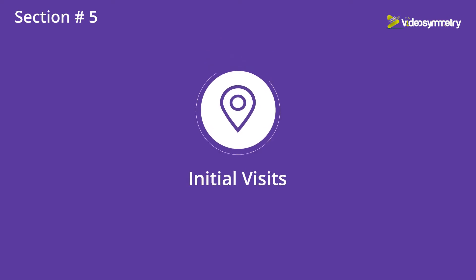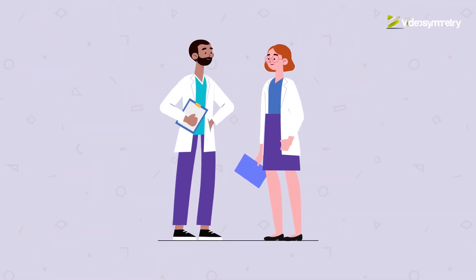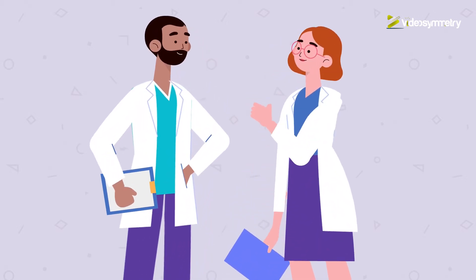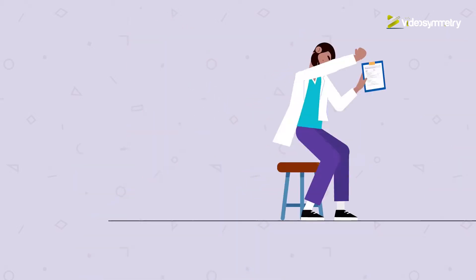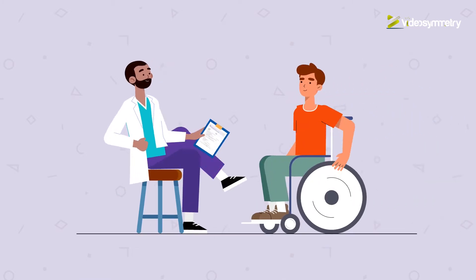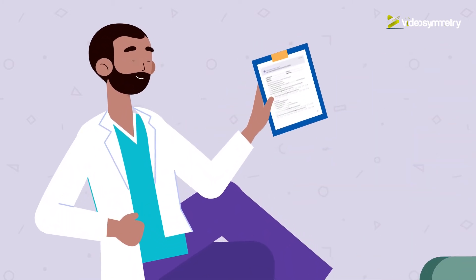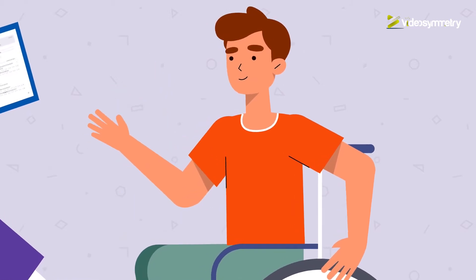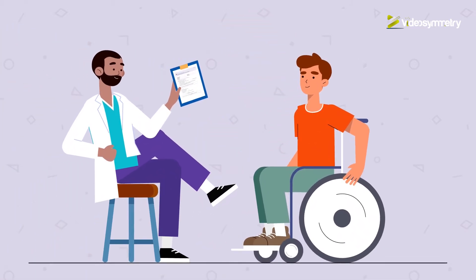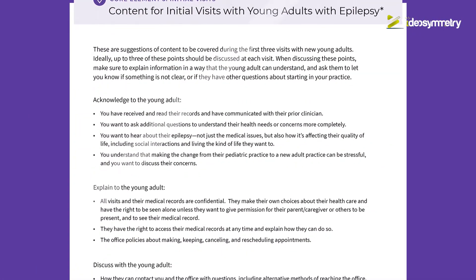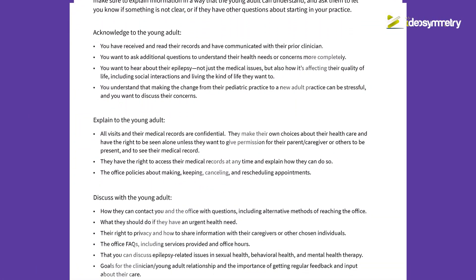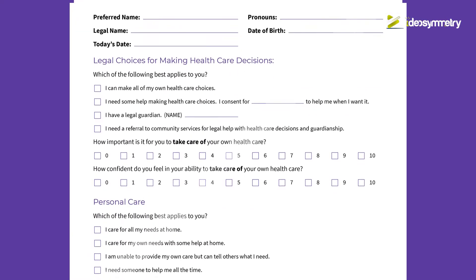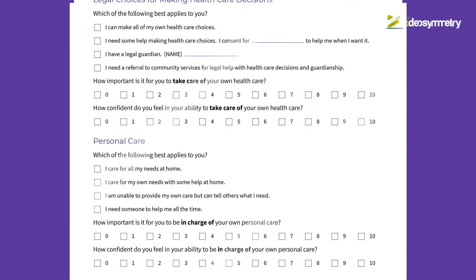Section 5: Initial Visits. The transfer package should be reviewed in advance by the team to prepare for a young adult's initial visit. During the initial visit, clinicians should address any patient questions about adult care. The plan of care, medical summary, and emergency care plan should also be shared. This section also includes customizable content for initial visits as well as a self-care assessment for the young adult patient to fill out.